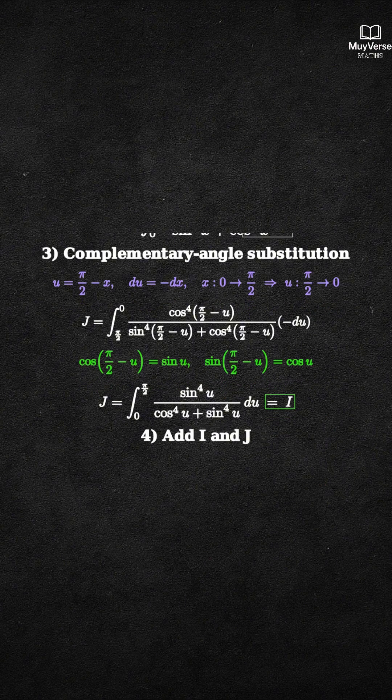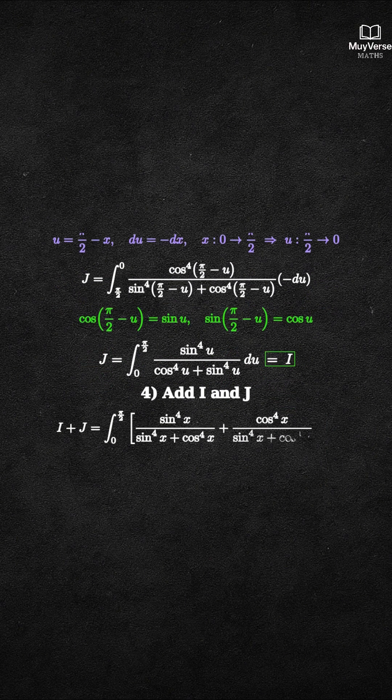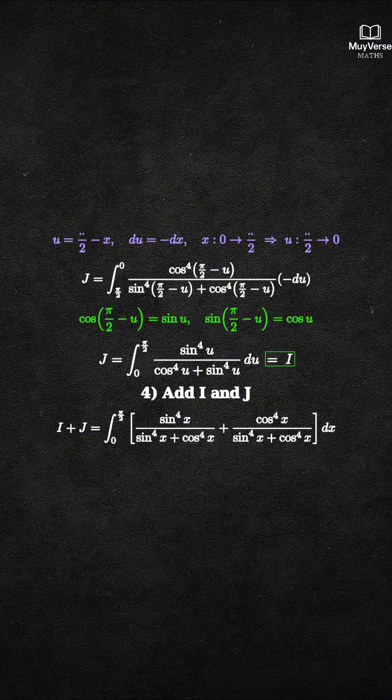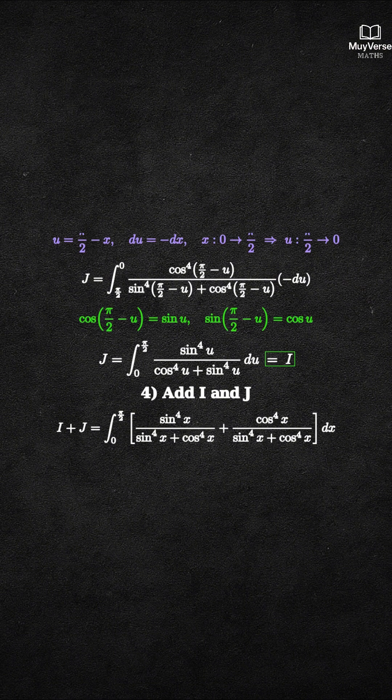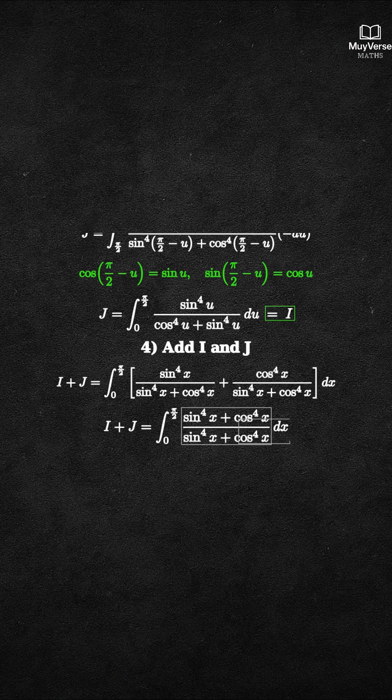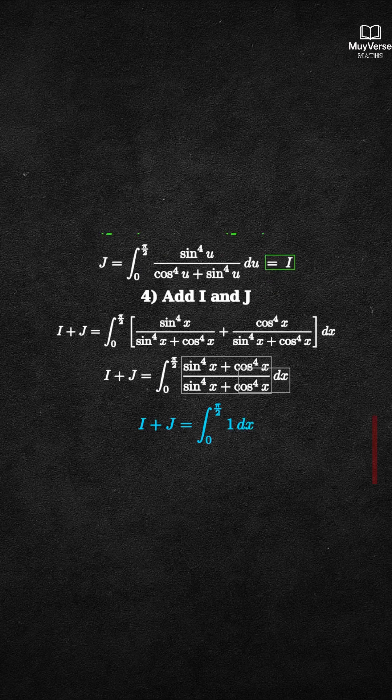Step 4: Add the two integrals. I plus J equals the integral from 0 to pi over 2 of sine to the 4th of x over the common denominator, plus cosine to the 4th of x over the same denominator. Combine the fractions. The numerator becomes sine to the 4th of x plus cosine to the 4th of x over the same denominator, which simplifies to 1.